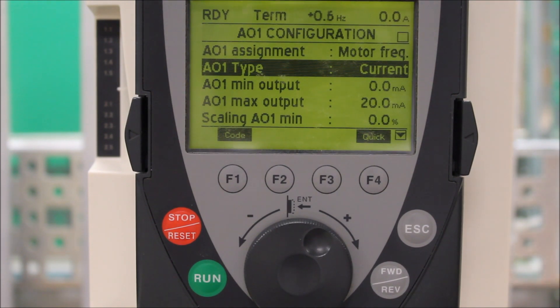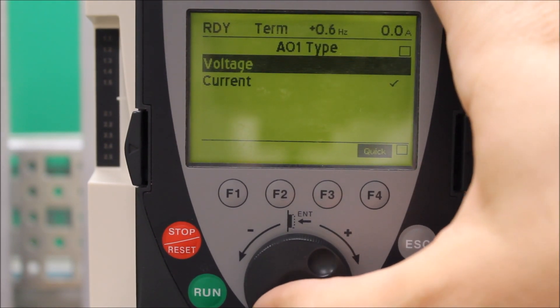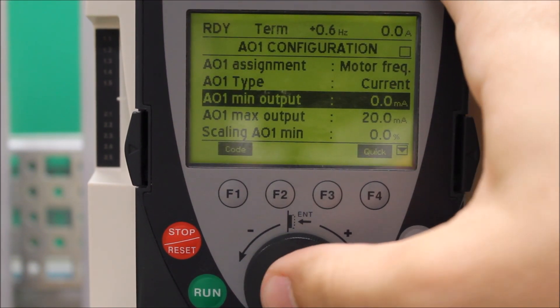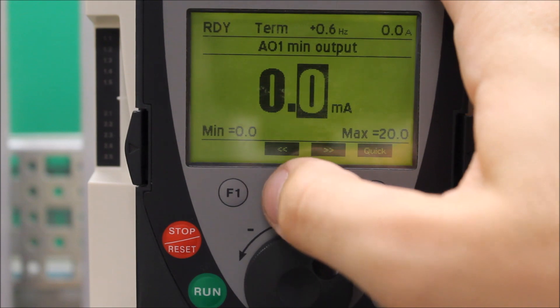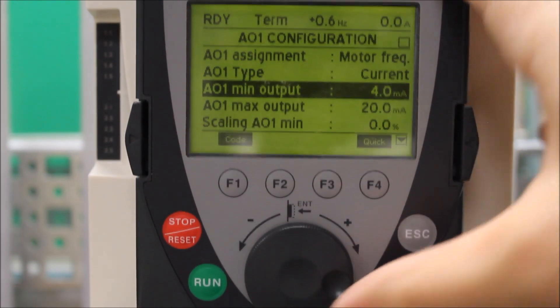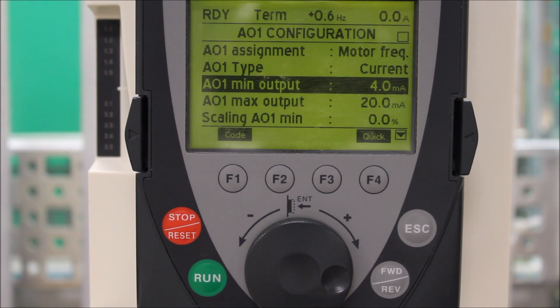Again, we talked about your type. You can change it to either DC voltage or current. Keep it current for now. You can change the minimum to 4 milliamps if you have a 4-20 milliamp system. We can make that change here. So we have the assignment as motor frequency, your type as current, your minimum of 4 milliamps, and your maximum of 20 milliamps. That's basically how you program the analog output on the 61 and 71 drives to show motor frequency.